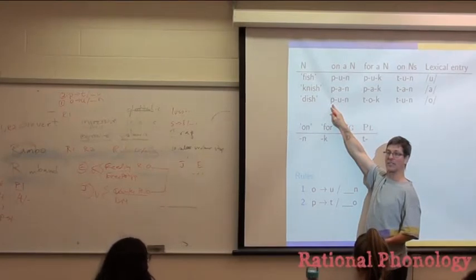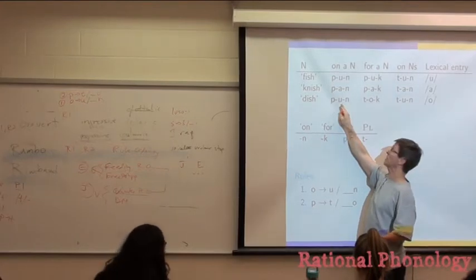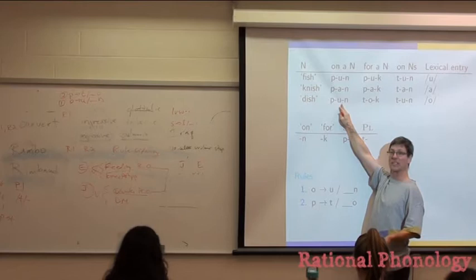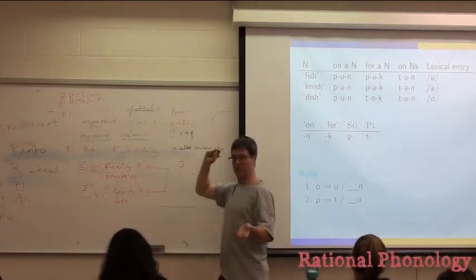Because of the rule. Singular. It's a singular marker, and it didn't get changed into a T because the environment got destroyed. Because the O became U. That's bleeding. You take away.